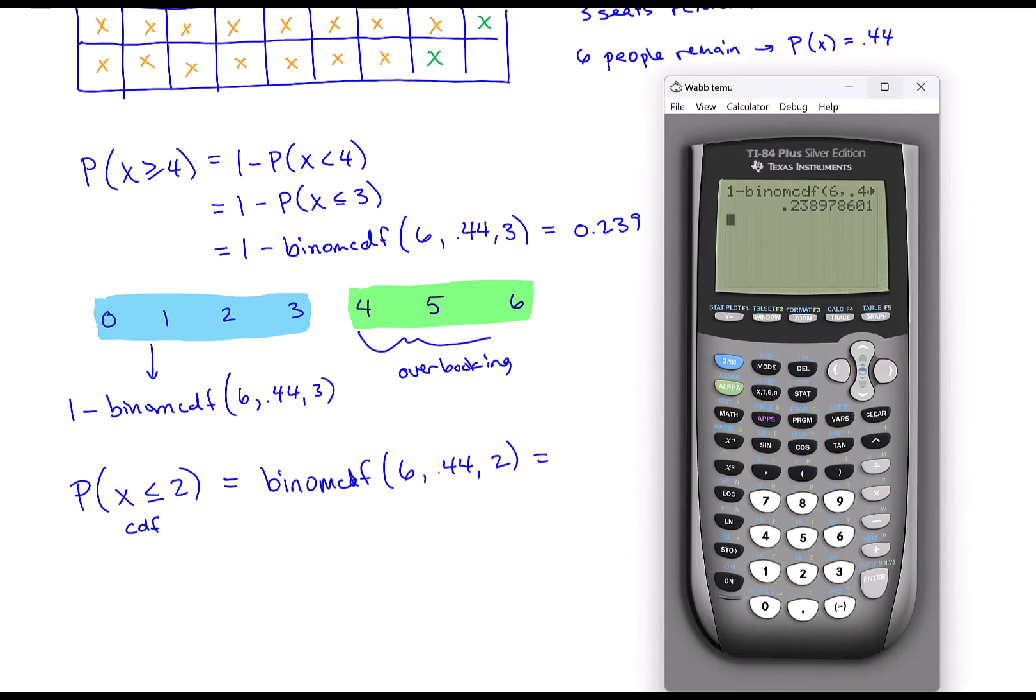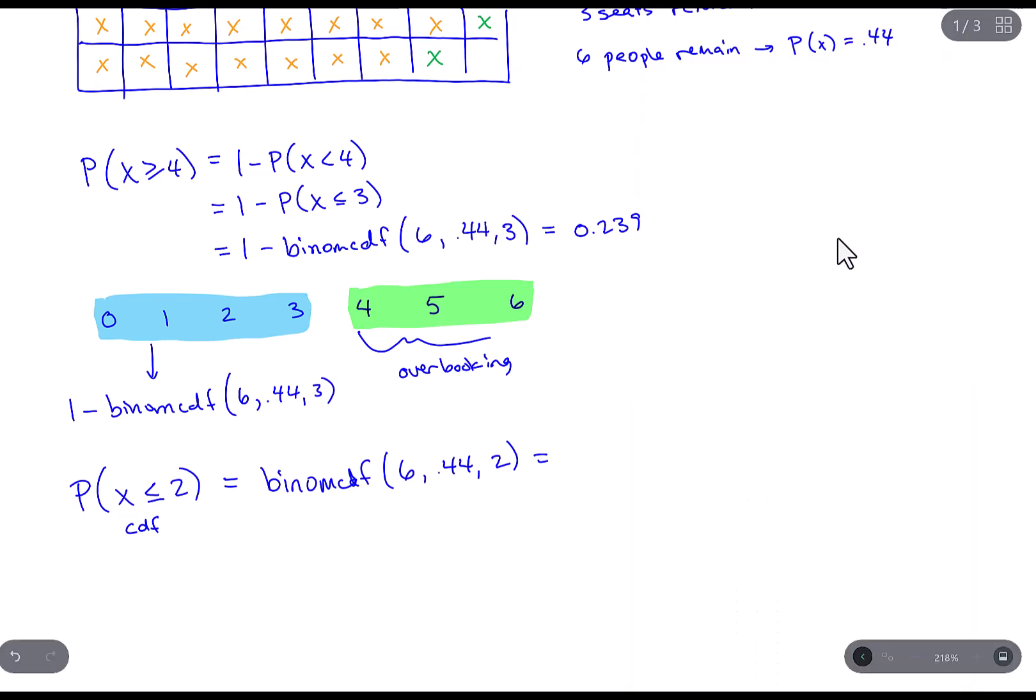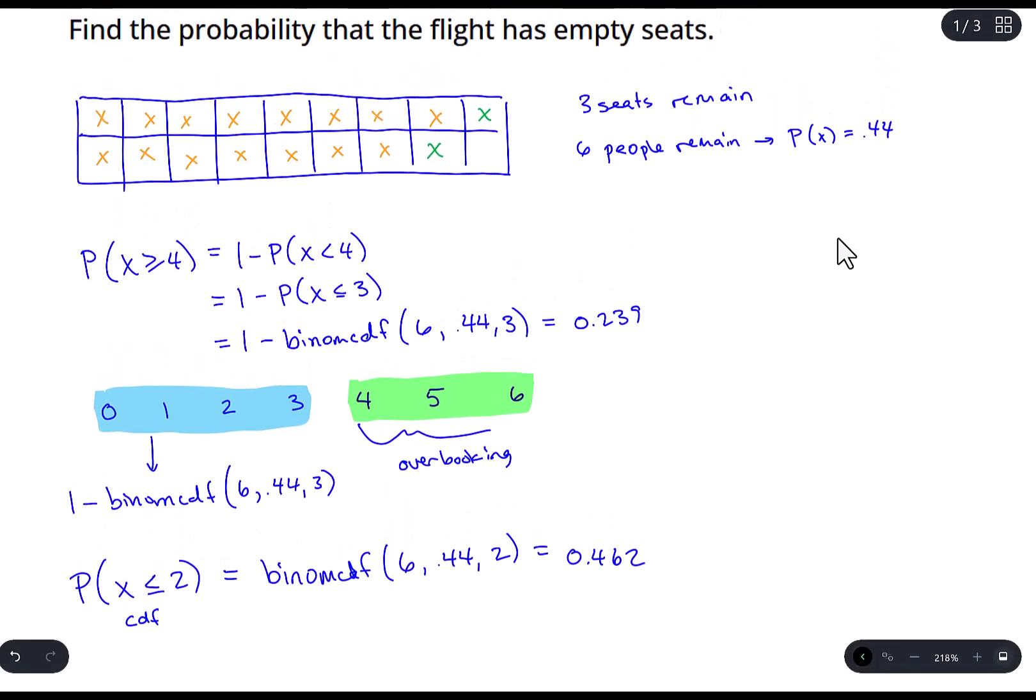So if we do that on the TI, that would look like - get the binom CDF function, 6, 0.44, change this to two, and we come up with 0.462. And that's our solution.